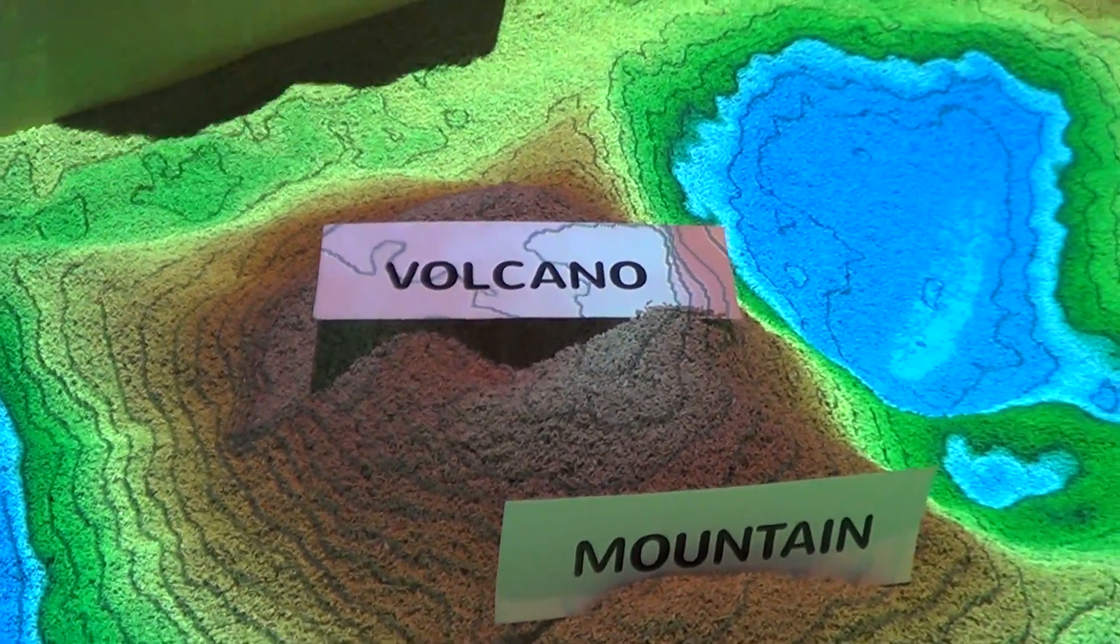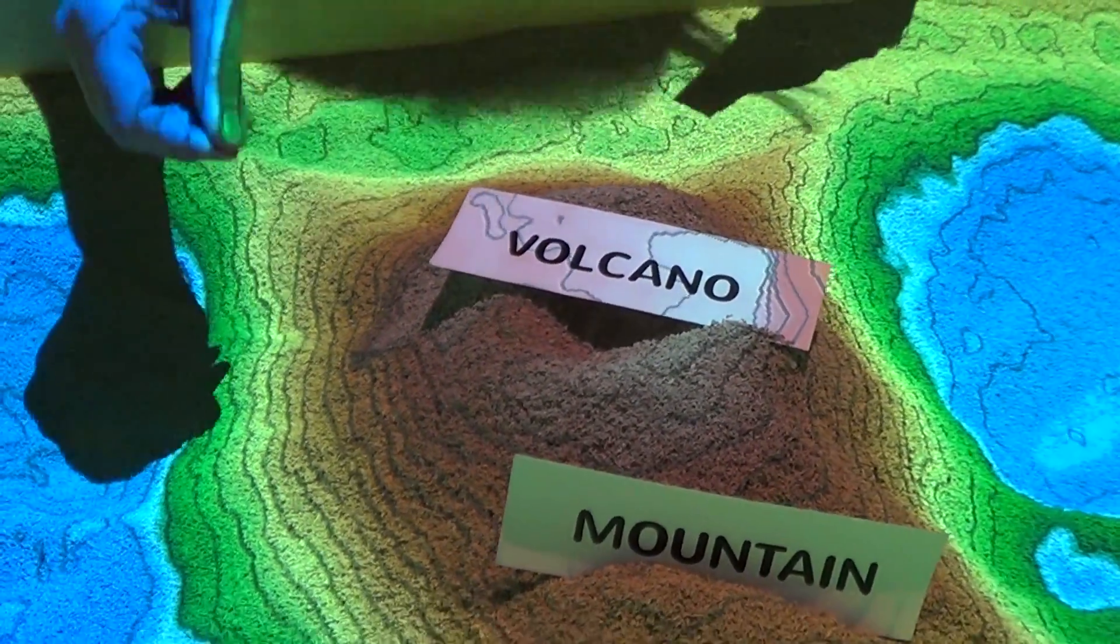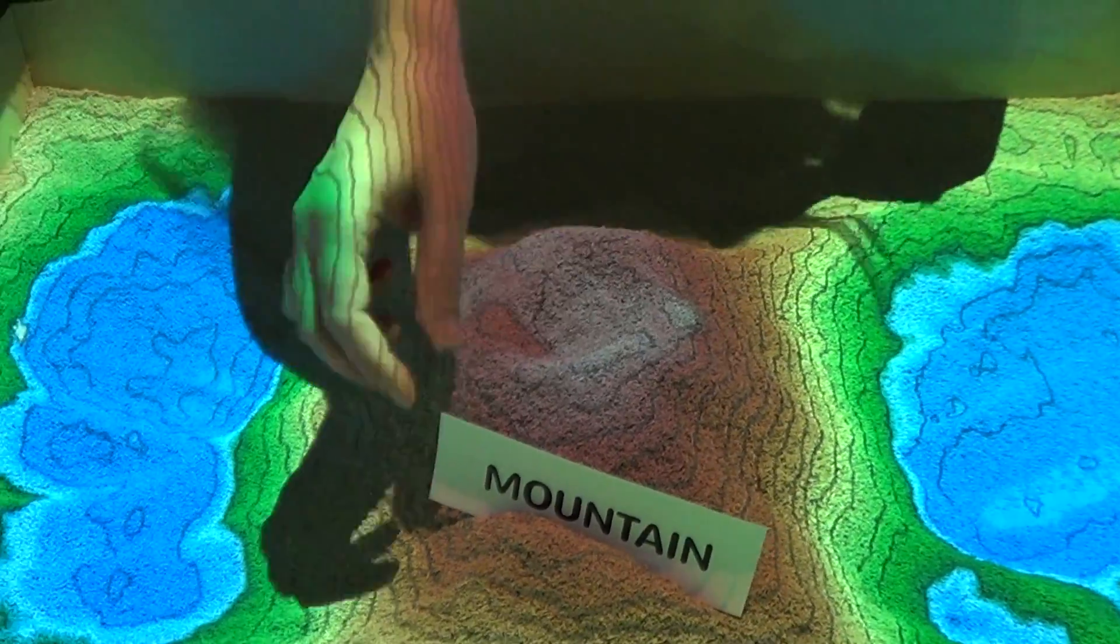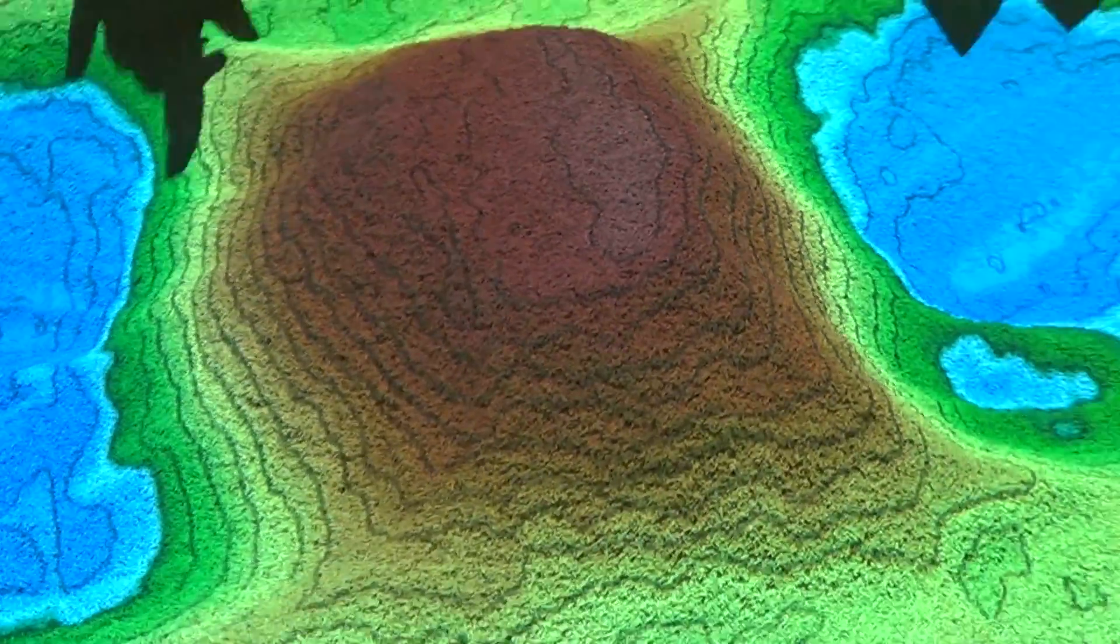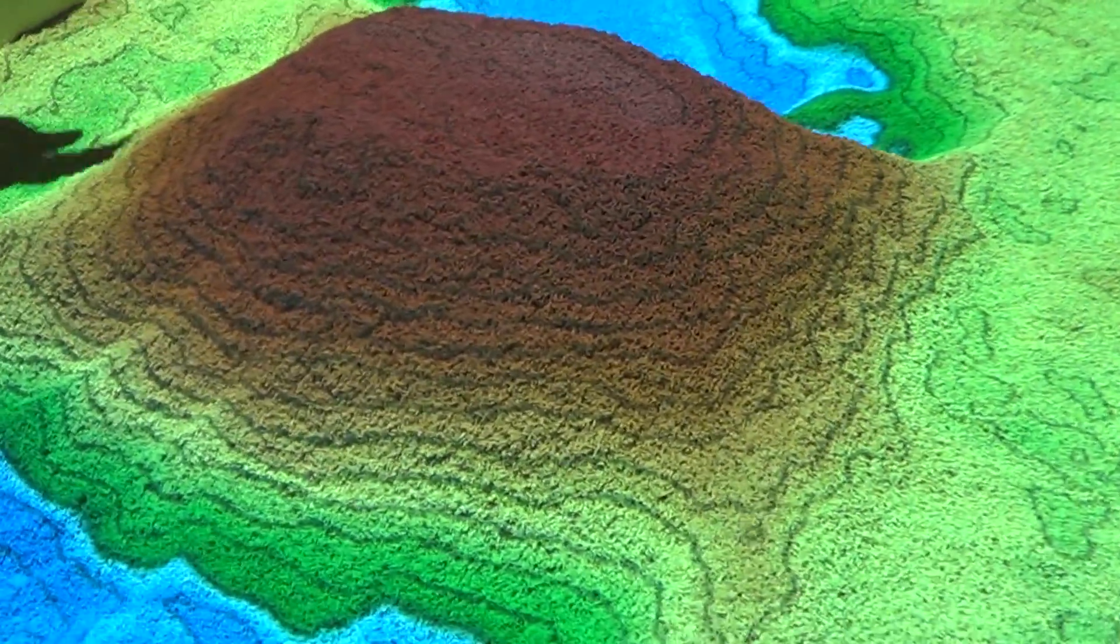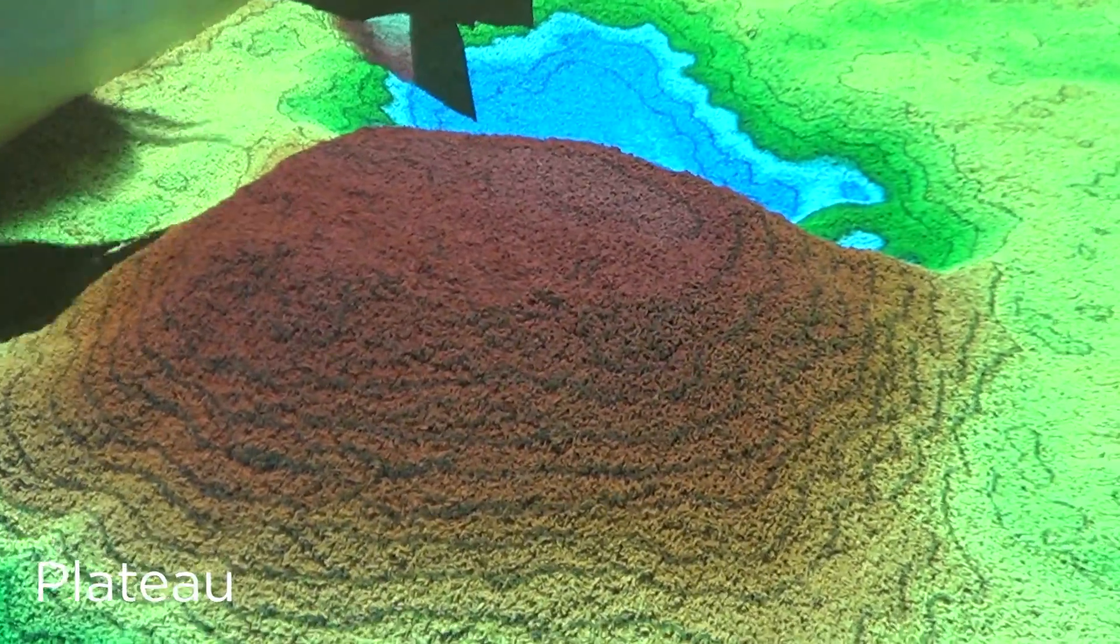Now there's another thing we could change and alter this landform. If I take away this and all of a sudden I make it flat on top, we would then classify that as a plateau.